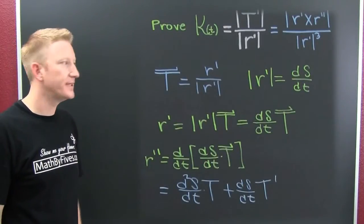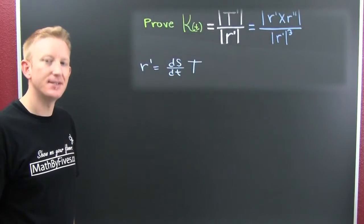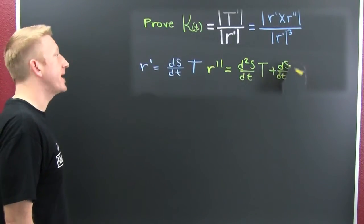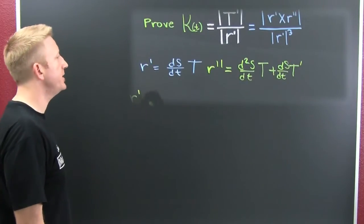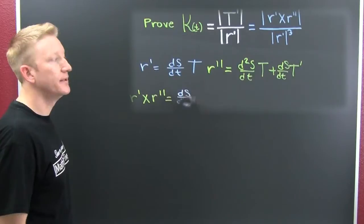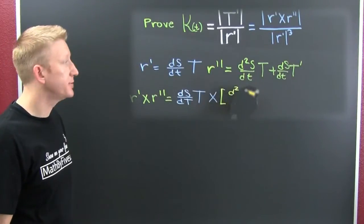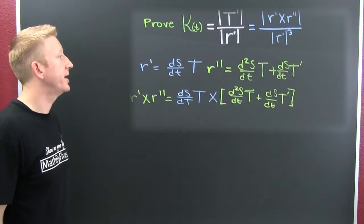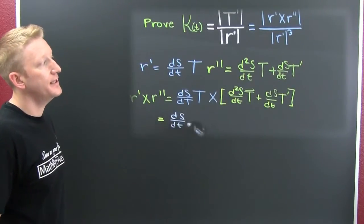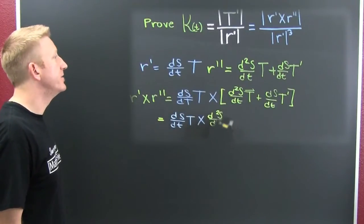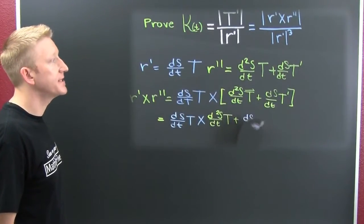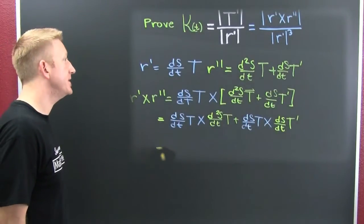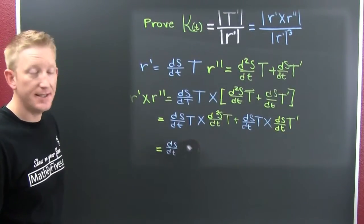Now let's consider the cross product between the two. We go through that construction and find r prime cross r double prime equals ds/dt times T, crossed with the sum of those other two terms. The cross product is distributive, so we distribute ds/dt times T into that cross product. We get ds/dt times T cross the second derivative of s times T, plus ds/dt times T cross ds/dt times T prime.